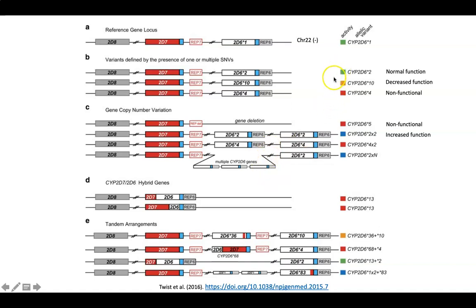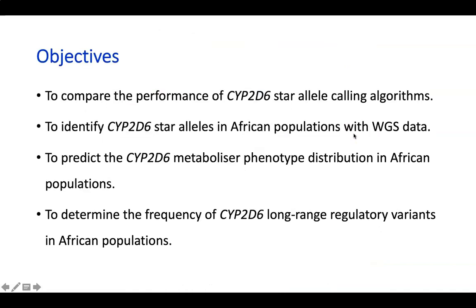Another thing to note from this figure is the functional annotations for the different alleles. We see normal function alleles, decreased function alleles which can be due to missense variants in the haplotype, non-functional alleles which can be due to frameshift and stop-gain variants in the haplotype, and increased function alleles from the duplication of functional gene copies.